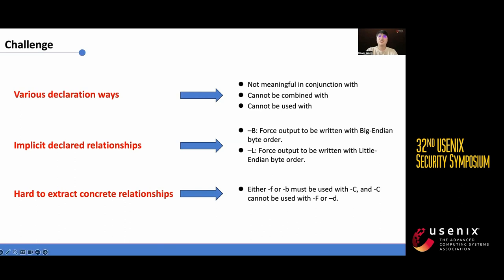Secondly, some relationships are implicitly declared, requiring comparison of multiple sentences. For instance, in the documentation of TFCP,